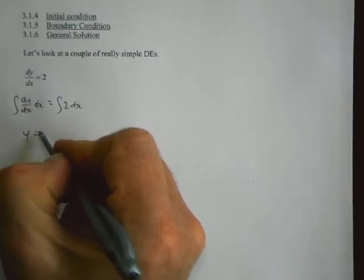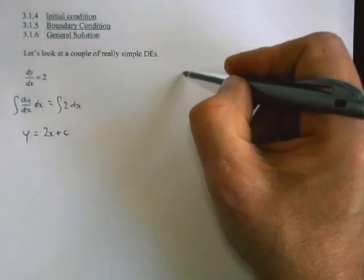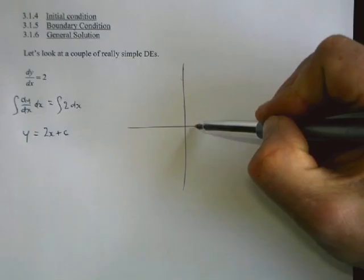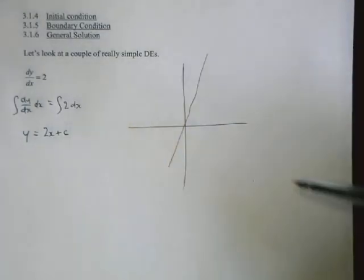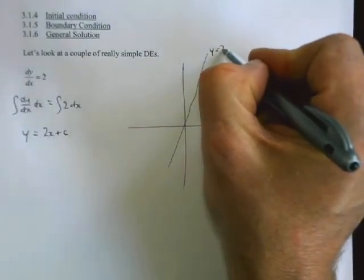If we go and draw a diagram of that, slope of 2 means every one we go long we go up 2, so it's going to be quite steep. Now it's a straight line. This is y equals 2x.